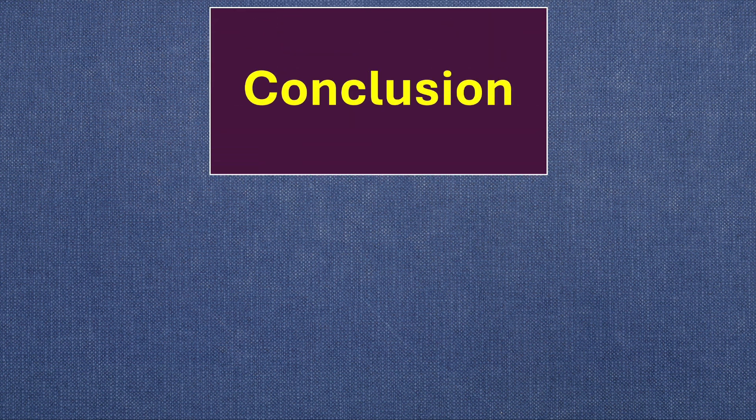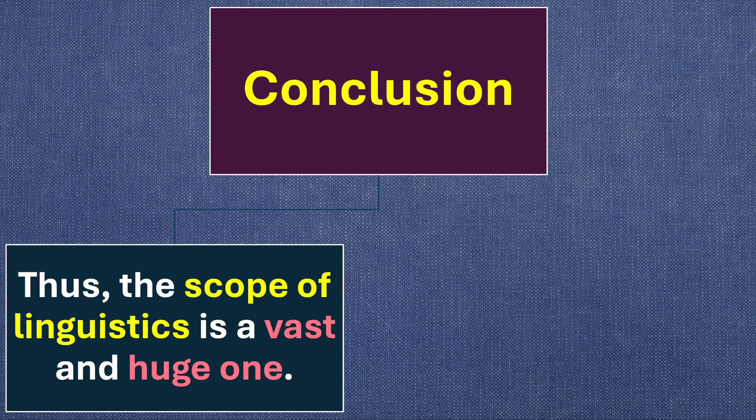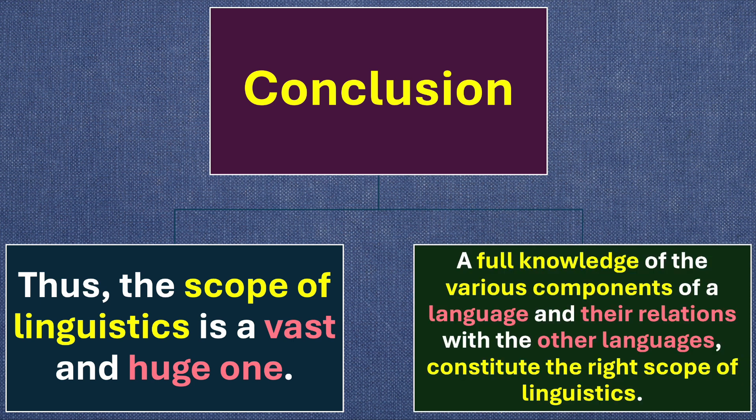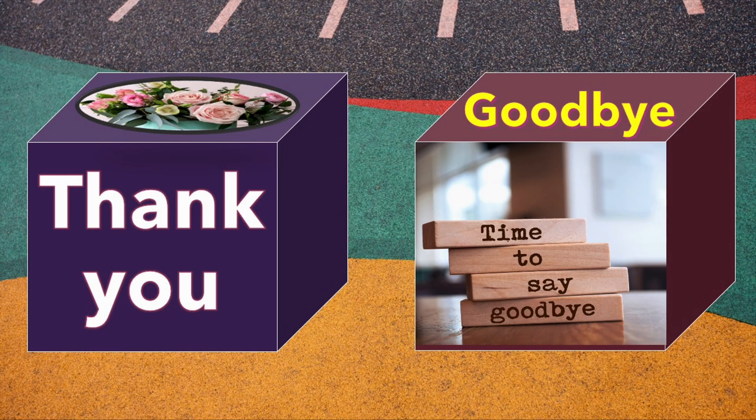So the scope of linguistics has greater influence over other branches of knowledge. Therefore, we can conclude that the scope of linguistics is a vast one — knowledge of the various components of language and their relations with other languages constitutes the right scope of linguistics. Hope you understand this concept. Thank you and goodbye.